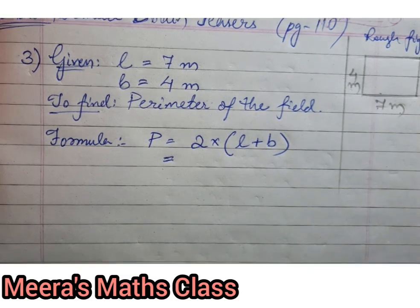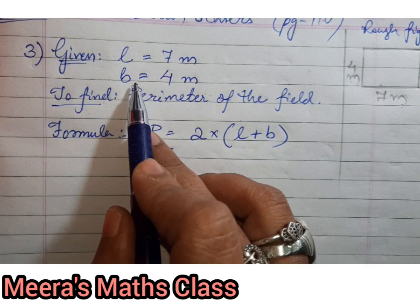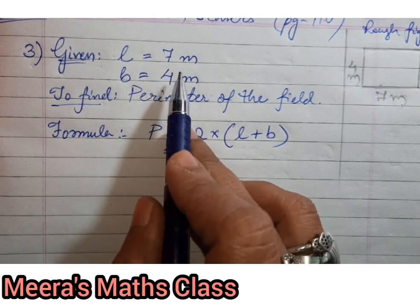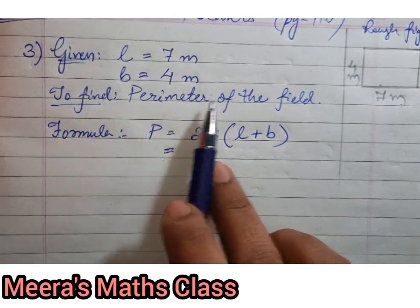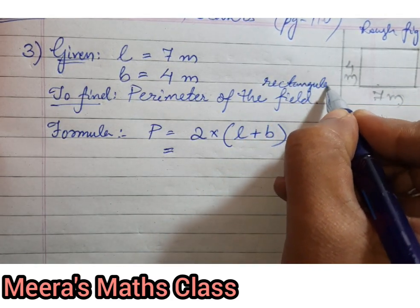And four meter breadth. Given is L is equal to... L stands for length, B stands for breadth. Seven meters. B is equal to four meters. To find: perimeter of the field. You can write even rectangular field, no problem.